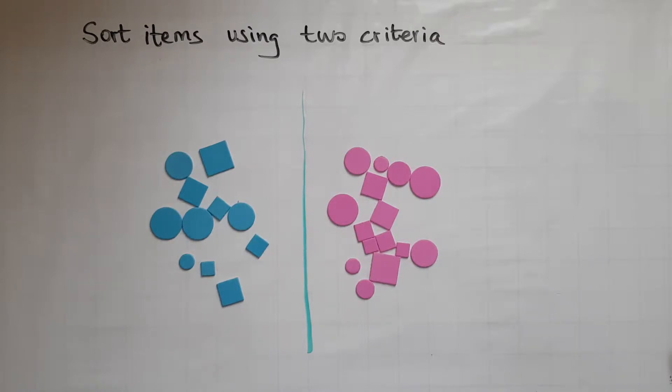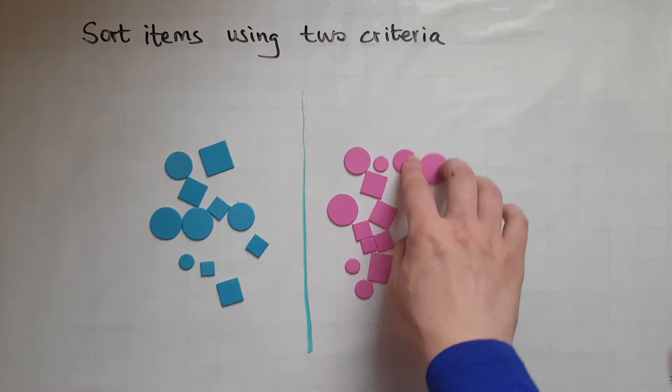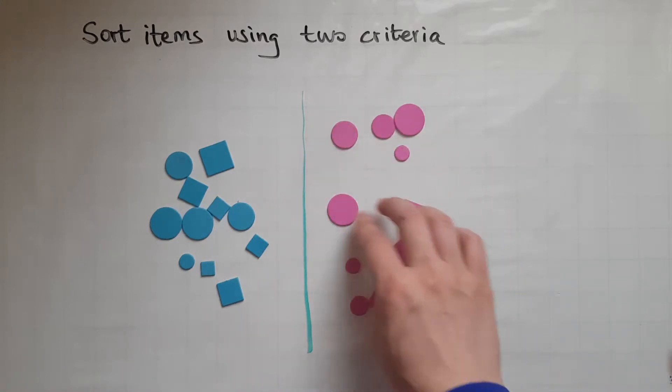Now I can also see that these shapes are not exactly the same. So I've got circles and squares so I could sort them as well based on that.